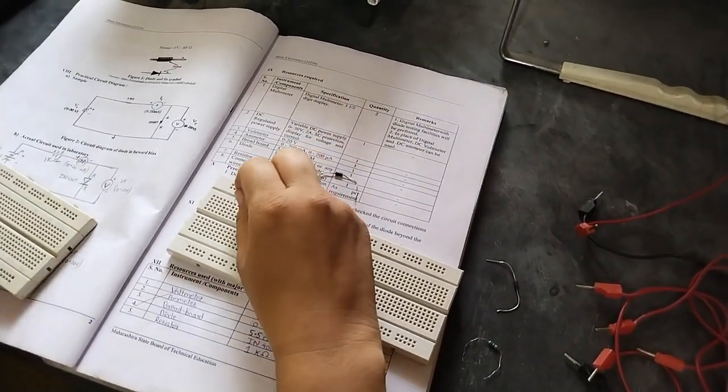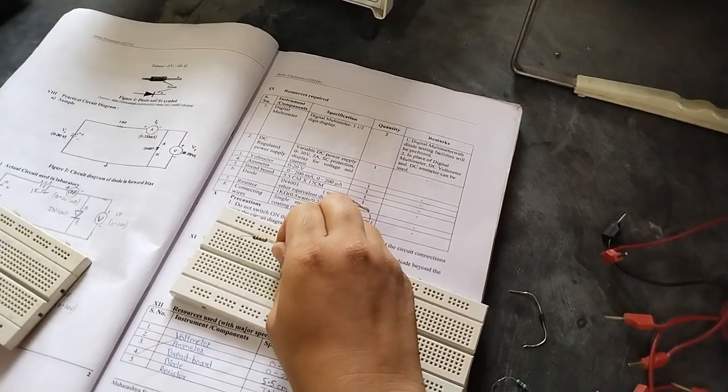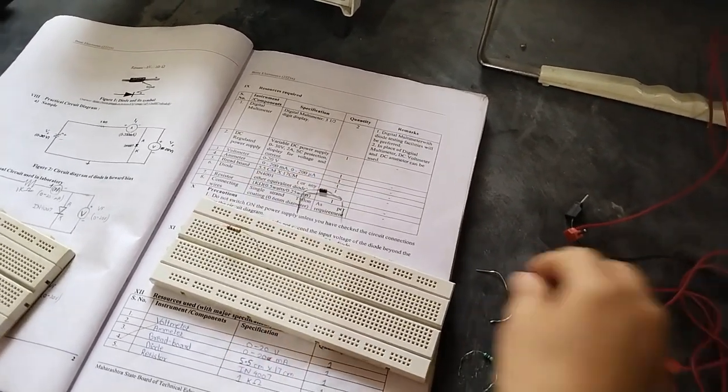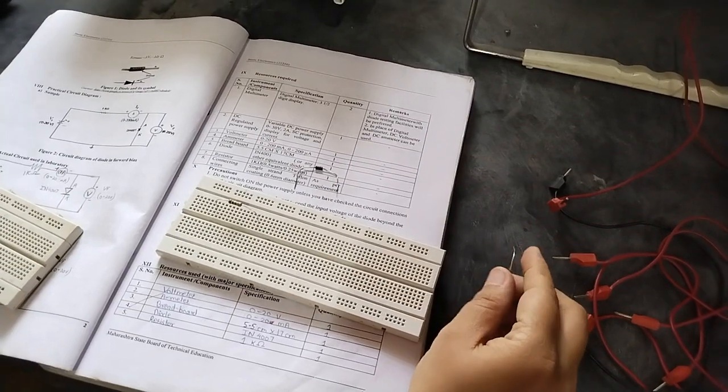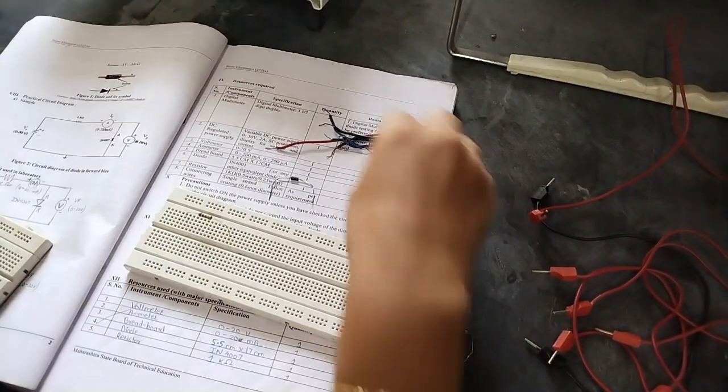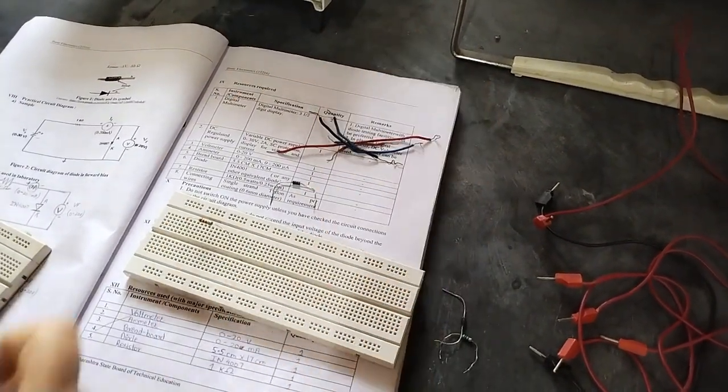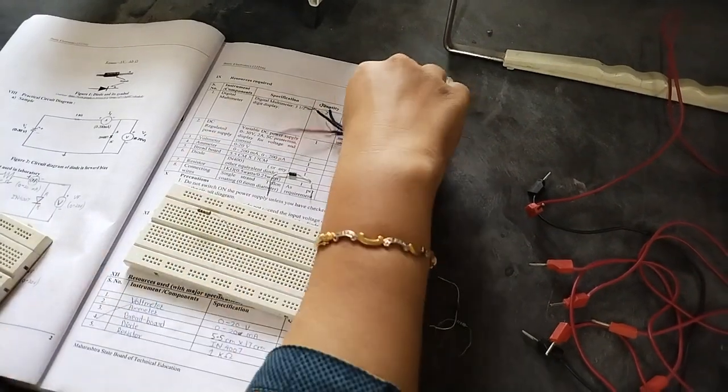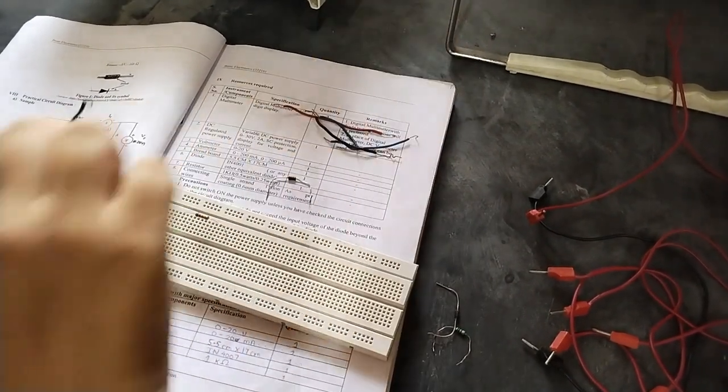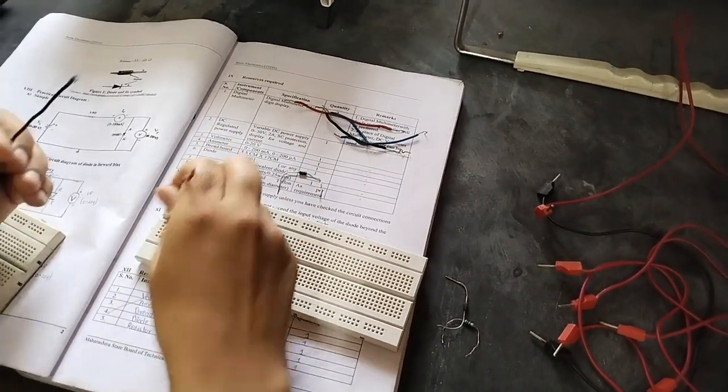Here resistor is connected in series. So let us connect the resistor in series. Then we have to take out the terminals for input. So I will take two terminals for input which we are going to connect to our power supply.